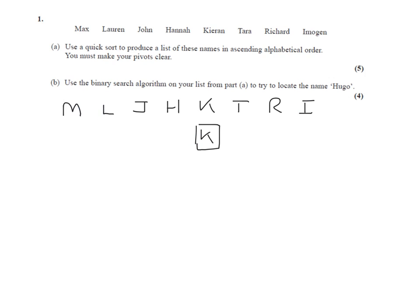And we do it in the order from left to right. So M is after K, L is after K, J is before K, H is before K, T is after K, R is after K, and I is before K.